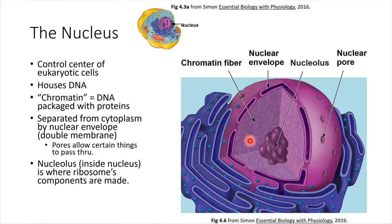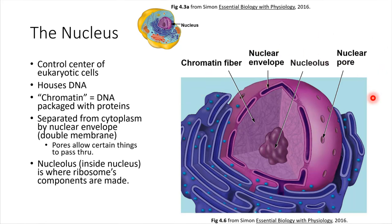The thing that separates the chromatin from the rest of the cell is the nuclear envelope. Think about what an envelope is — it's just something that encloses other things. Same idea here: the nuclear envelope encloses all of the DNA and chromatin, keeping it separated from the rest of the cytoplasm.